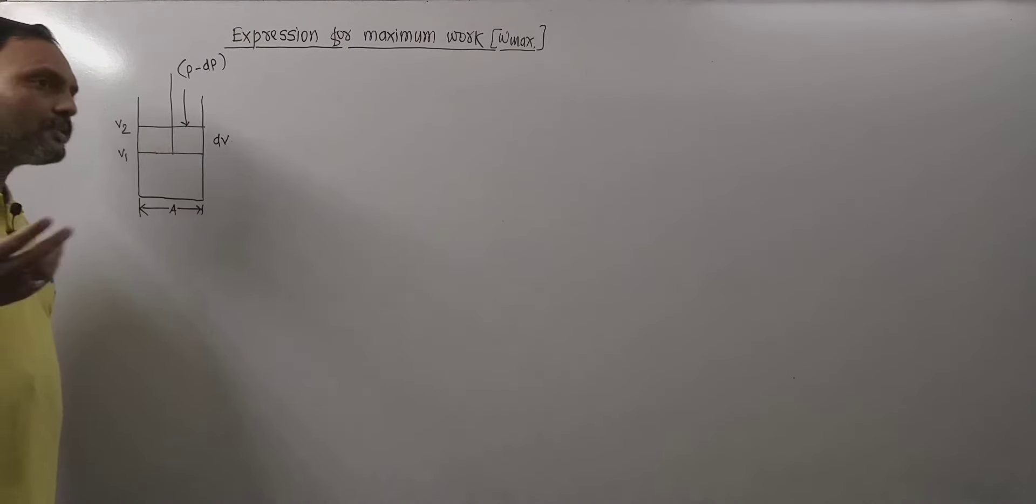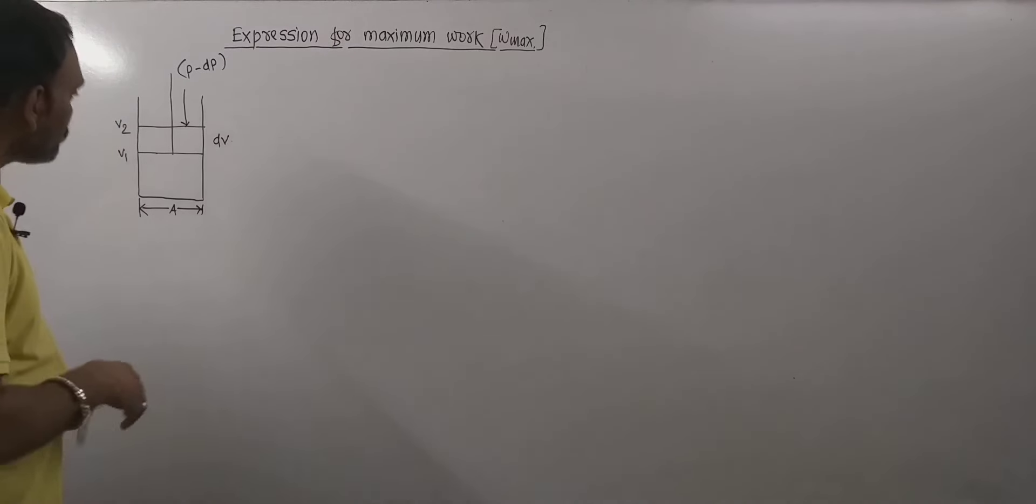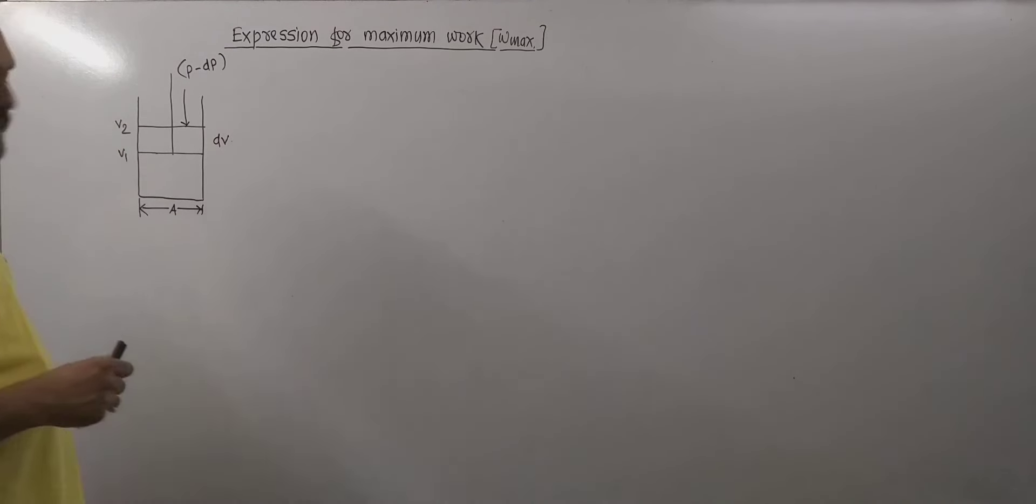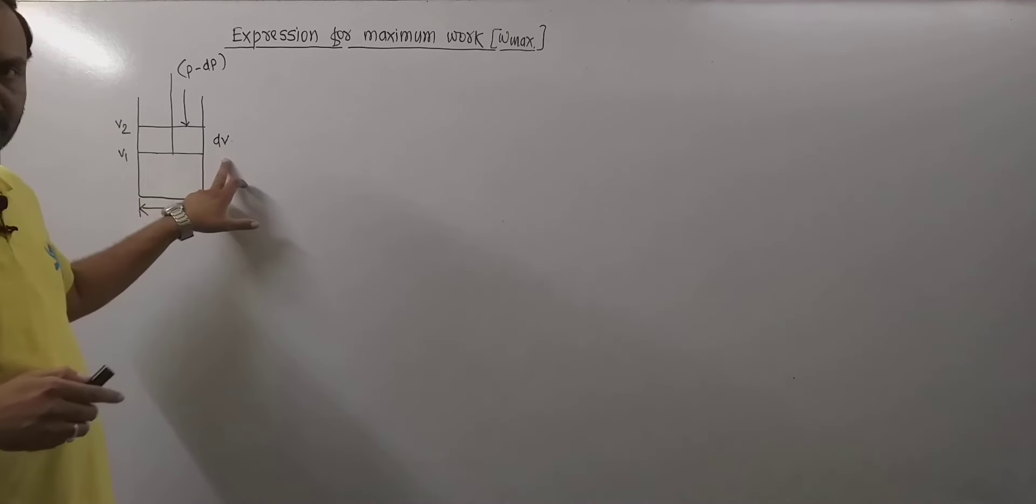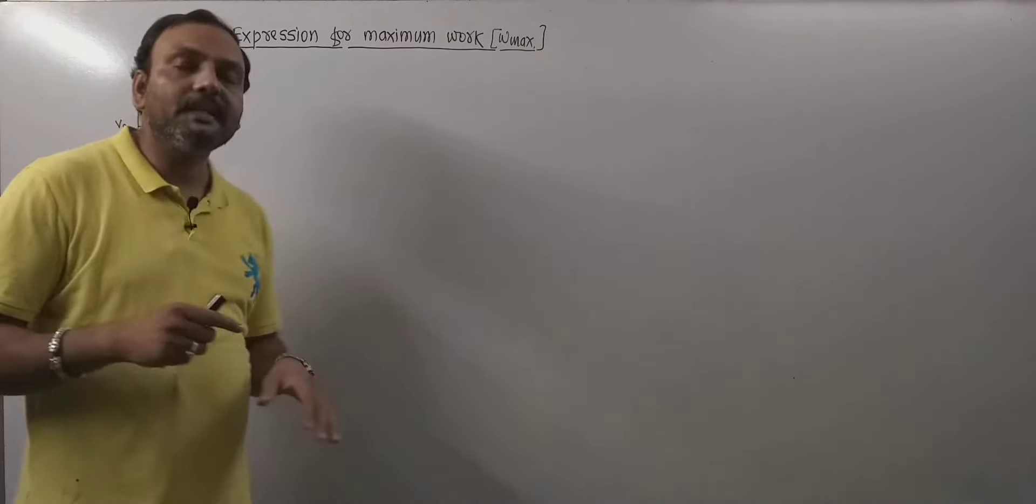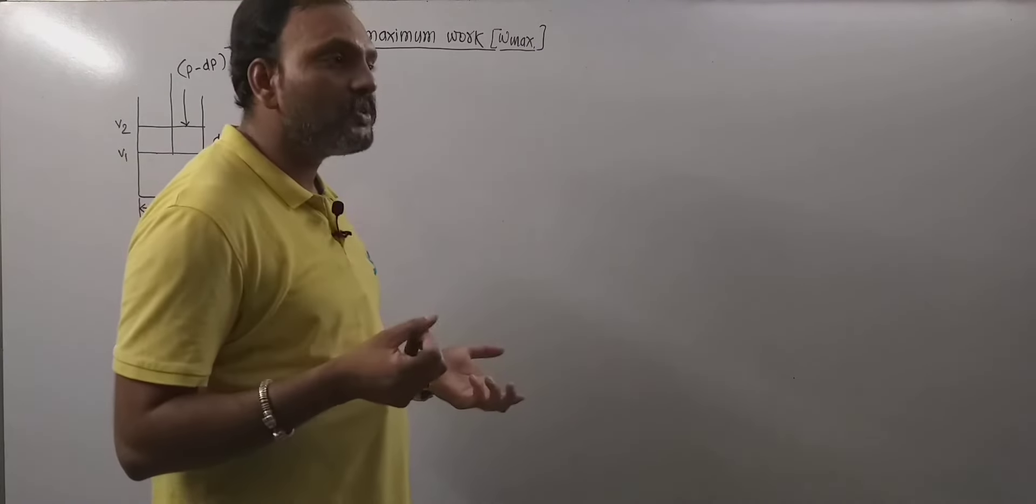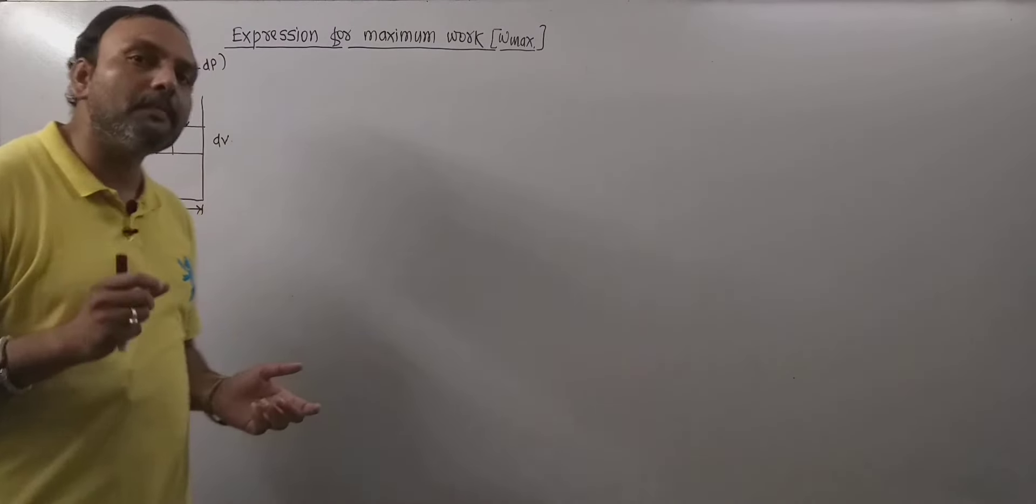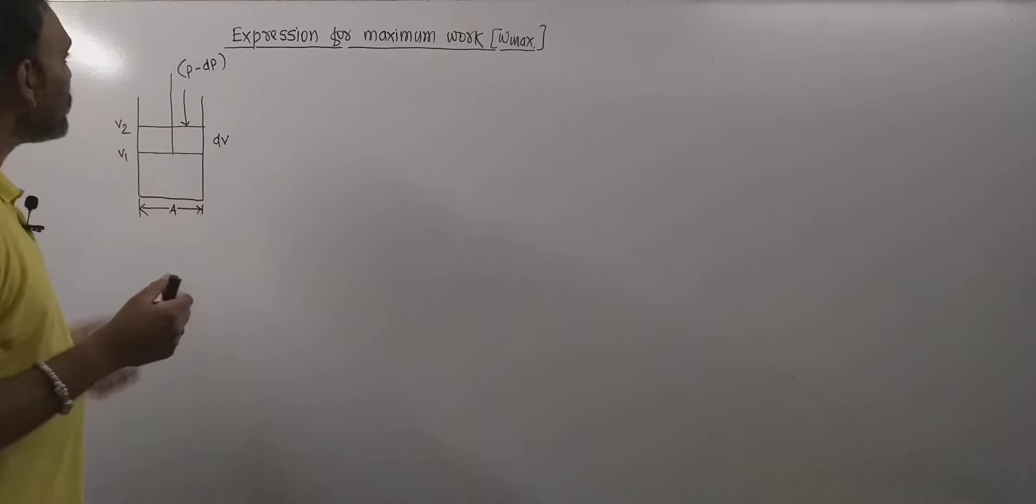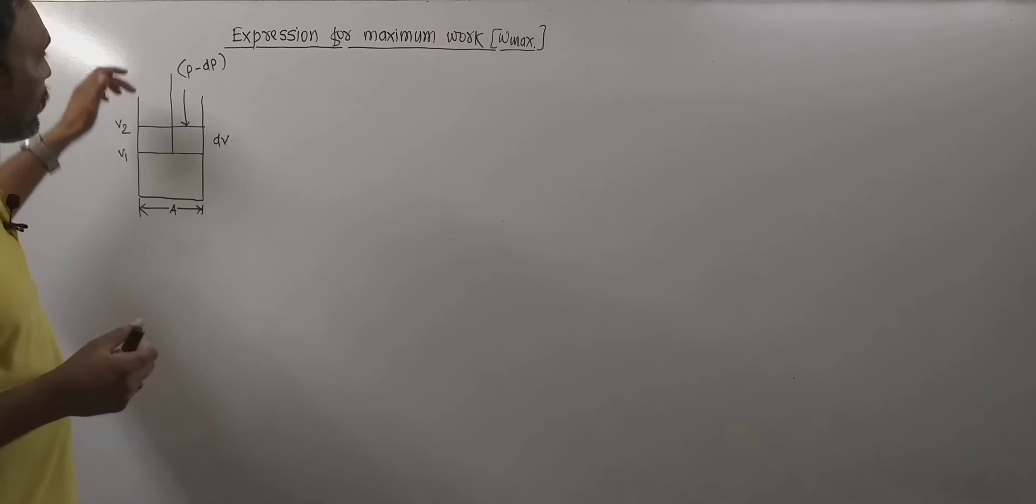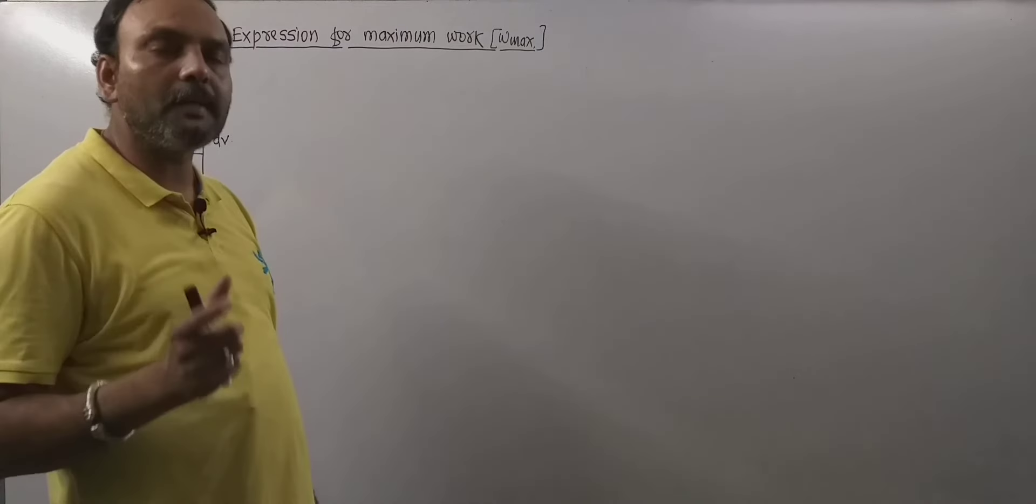So the changes which can be seen are negligibly small. Due to expansion, volume changes slightly by dV and the pressure reduces by the small amount dP. Afterwards, system establishes equilibrium, so net external pressure acting on the piston would be p minus dP.